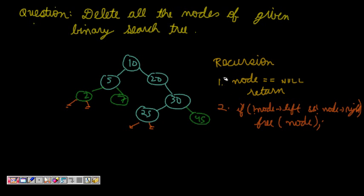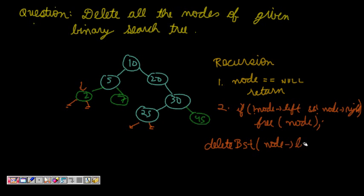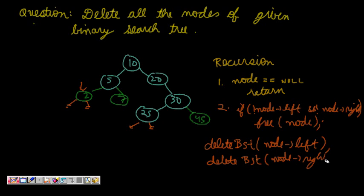For all other cases, instead of freeing immediately, I will traverse the tree. I'll call the function — let's say deleteBST — with node->left for one part, and then call deleteBST with node->right.